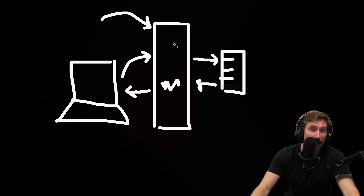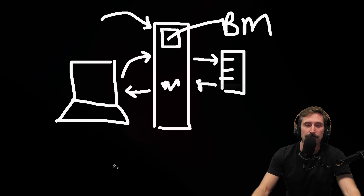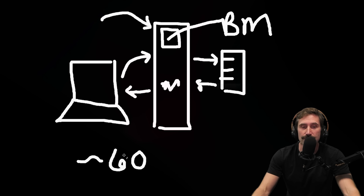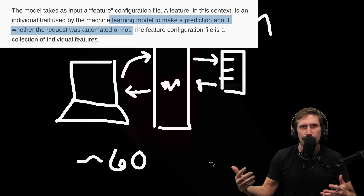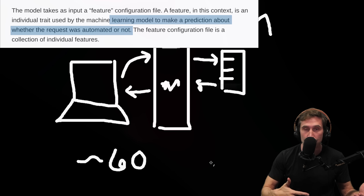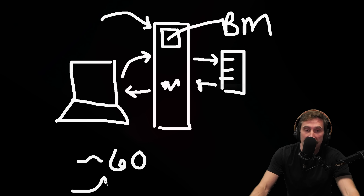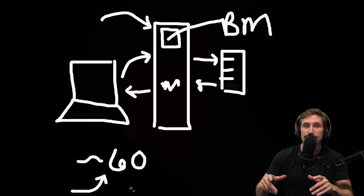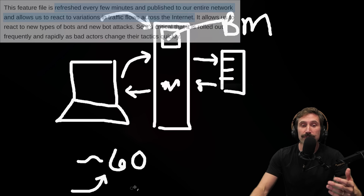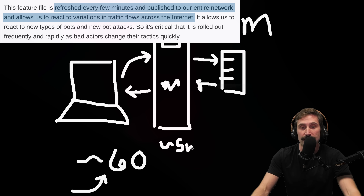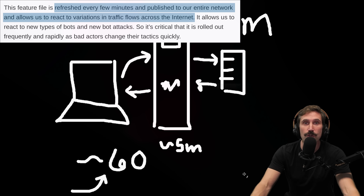Now that you understand the basics of a reverse proxy, one of Cloudflare's services is called bot management. How bot management works is that it takes approximately 60 different features and establishes a statistical model to say whether you are or are not a bot — whether to serve you traffic, whether you're high risk or low risk. These features need to change all the time; it can't be a static set. So it's refreshed approximately every five minutes, a new set of features hits the bot management, keeping it up to date when new attacks happen.